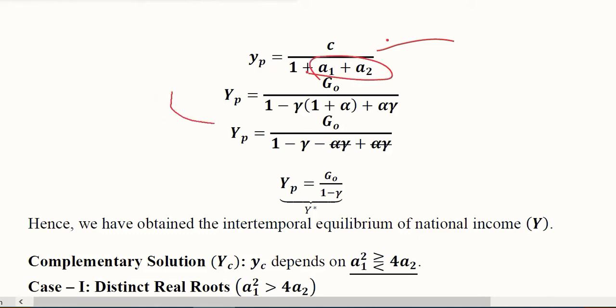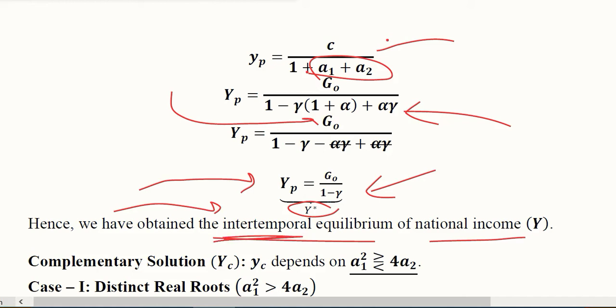We are putting the values of A1 and A2 here. Cancellation and simplification will give us this result. This is the particular integral or the equilibrium level of national income. In other words, it is the intertemporal equilibrium of national income because this is the dynamic version of the equilibrium.